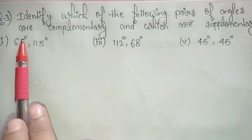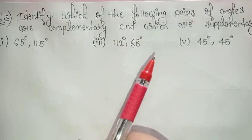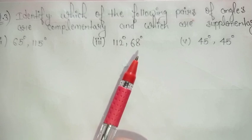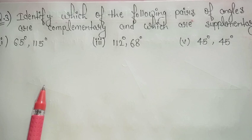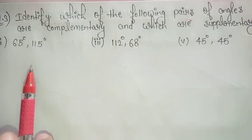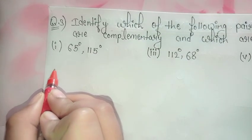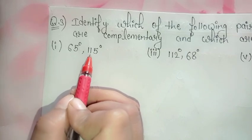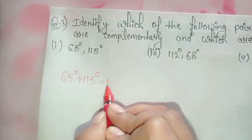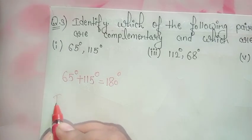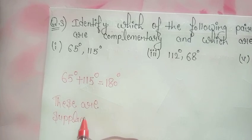Now come to question number 3: identify which of the following pairs of angles are complementary and which are supplementary. We know that if the sum of two angles is 180 degrees they are supplementary, and if the sum is 90 degrees they are complementary. We will find the sum of each pair and check. First part: 65 degrees and 115 degrees — 65 plus 115 equals 180 degrees, so these are supplementary angles.